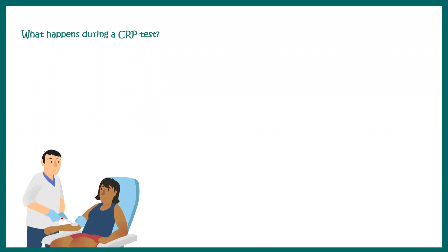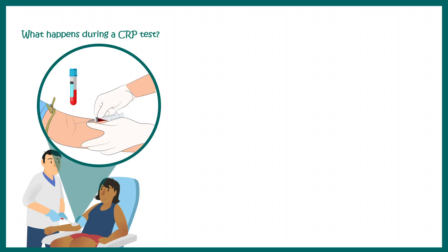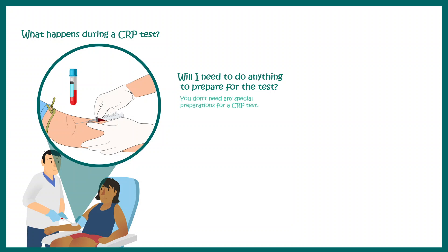Now let's talk about what really happens during a CRP test. It's just a blood test — a medical professional takes blood from your veins, which is very simple. You don't need any special preparation before this test, and there is no significant risk associated with it.